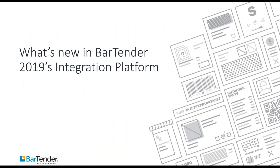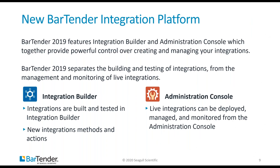Bartender 2019 features new companion applications that replace Commander: Integration Builder and the Administration Console. The Administration Console has absorbed several roles including security and integration management of your live integrations. You'll use Integration Builder to build your integrations, including all configuration settings like what folder to scan and what type of file your integration will process. You can leverage many new actions — not just print actions, but other powerful actions as well.